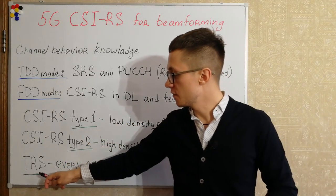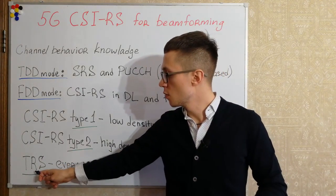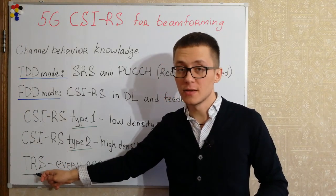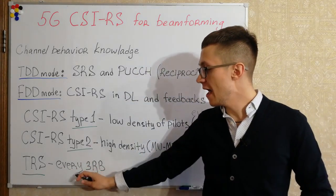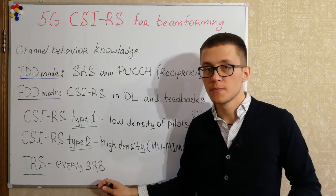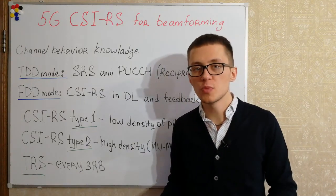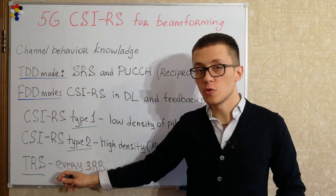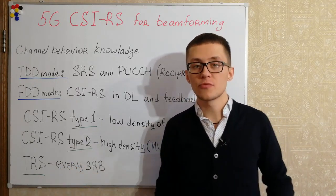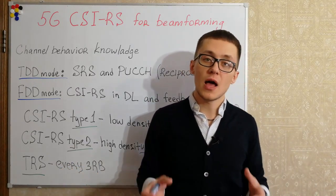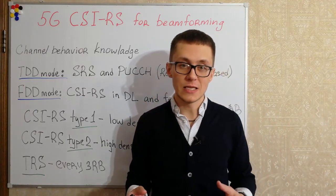We also have an additional type of reference signal in 5G NR called the tracking reference signal, with very high density — transmitted every three resource blocks. It is used for tracking and beam management, and I will tell you about this reference signal at the end of this video.